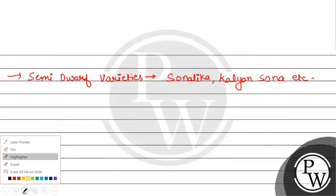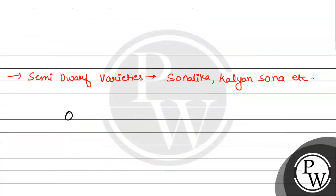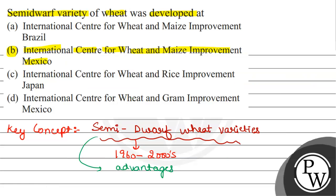Option B is correct. Option A says International Center for Wheat and Maize Improvement, Brazil — it is not situated in Brazil, so Option A is wrong. Option C says International Center for Wheat and Rice Improvement, Japan — semi-dwarf wheat varieties were not developed there, so Option C is also wrong. Option D says International Center for Wheat and Gram Improvement, Mexico — semi-dwarf wheat varieties were not developed there either, so Option D is also wrong. Our correct and final answer is Option B.